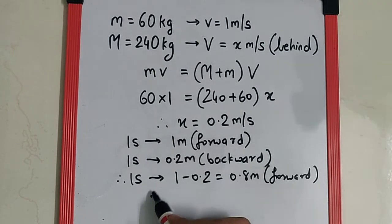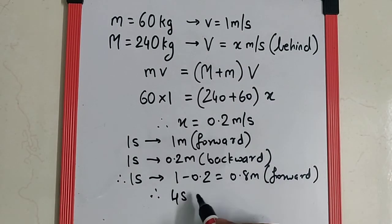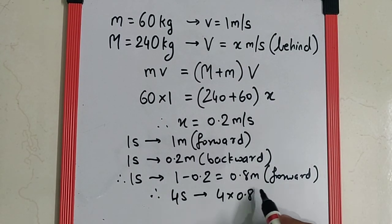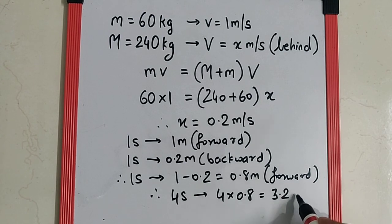So we can say in four seconds we will have 4 into 0.8 that is 3.2 meter and that is your final answer.